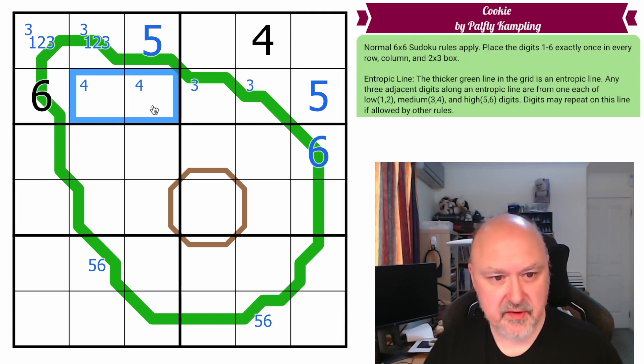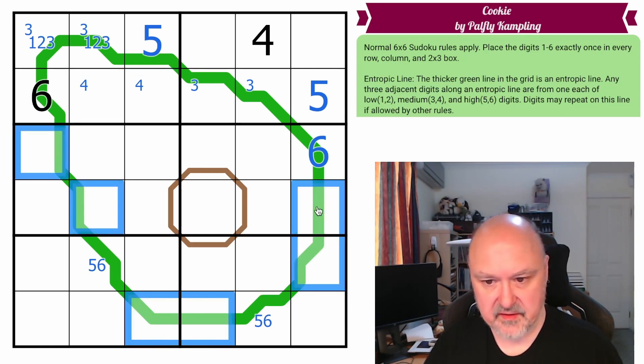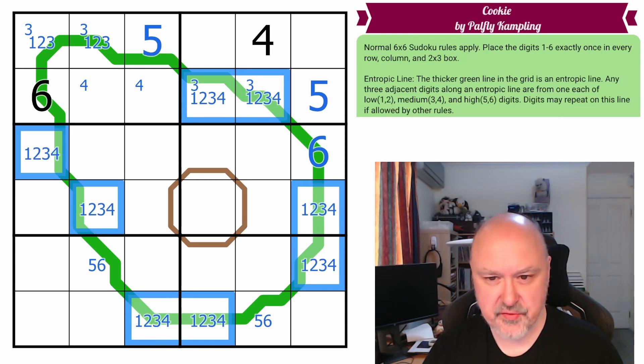Now, I'm really not sure where I'm going from here. So, these, of course, are all, and this is terrible pencil marking, but these are all from 1, 2, 3, 4, because they can't contain 5s and 6s.